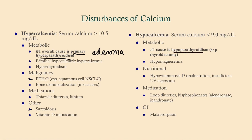For hypocalcemia, the number one cause is hypoparathyroidism due to thyroidectomy — a primary hypoparathyroidism — because the parathyroid glands are intimately associated with the thyroid and may be inadvertently removed during a total thyroidectomy. Another cause is hypomagnesemia, which also produces a primary hypoparathyroidism because magnesium is required to release PTH. Even with a structurally intact parathyroid gland, low magnesium means low PTH.